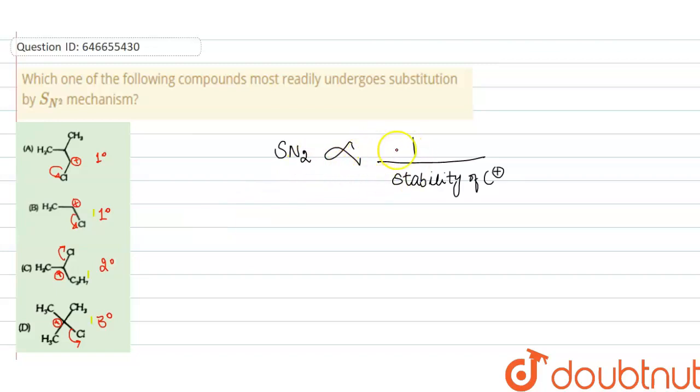Since SN2 mechanism is inversely proportional to stability of carbocation, the most stable carbocation—what is the order of stability? Order of stability of carbocation is tertiary, secondary, and primary. So the least the stability of carbocation, more readily it will go into the SN2 mechanism.